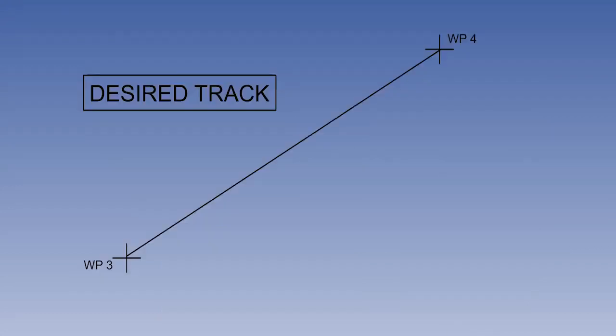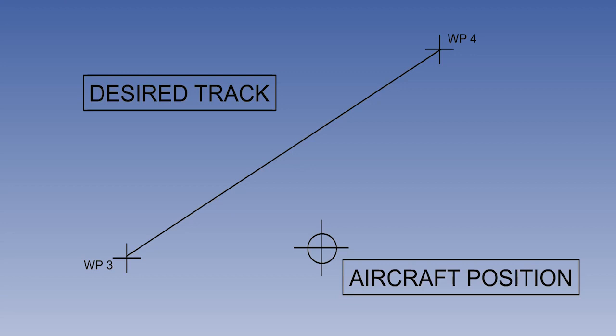This is a diagram of cross-track displacement. The INS has been programmed to steer the aircraft between waypoints 3 and 4. However, for some reason, the IN has been disconnected from the autopilot and the aircraft has been flown out to the right of track.